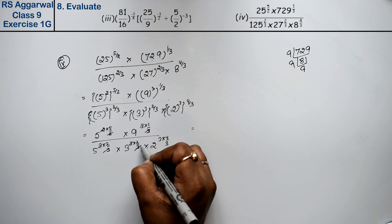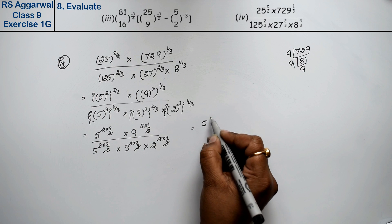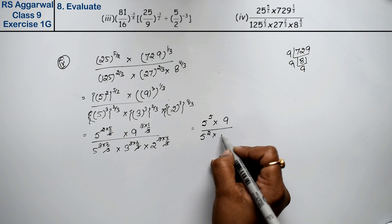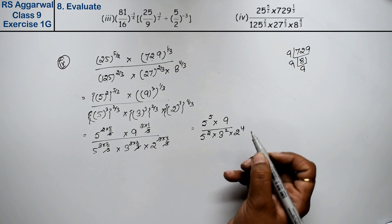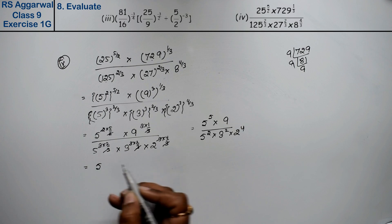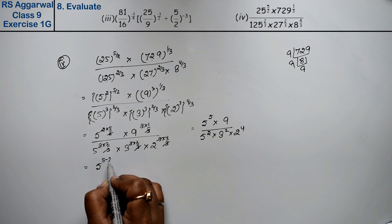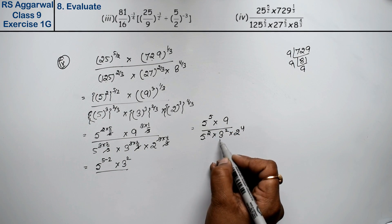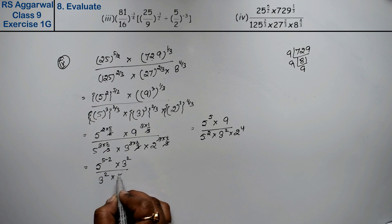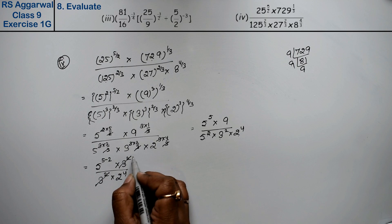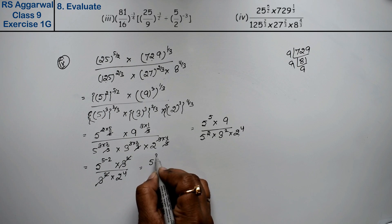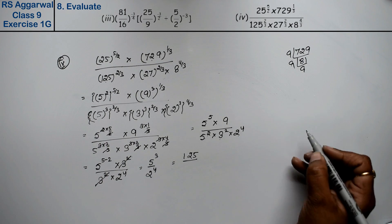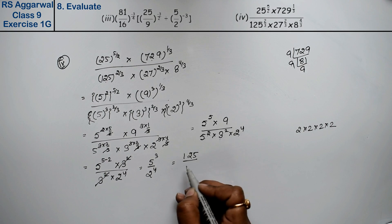Now canceling: the 2s cancel, the 3s cancel. We are left with 5 to the power 5, into 9 to the power 1 = 9, upon 5 to the power 2, into 3 to the power 2, into 2 to the power 4. Simplifying further: 5 to the power 5 minus 2 = 5³. And 9 = 3², so 3² upon 3² cancels to 1. Leaving us with 5 to the power 3 upon 2 to the power 4, which is 125 upon 16. That is the answer.